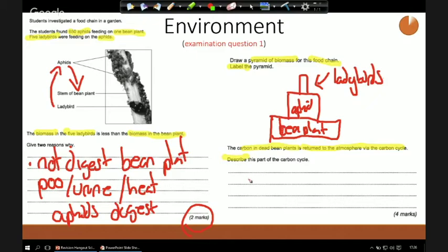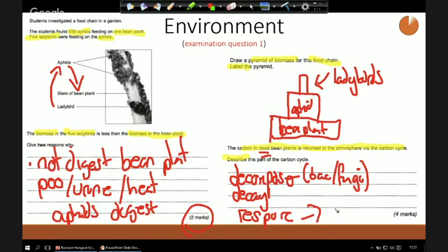For four points, we need to describe the part of the carbon cycle where dead bean plants are returned to the atmosphere. How's that carbon from something that's died getting back? Well, we're getting one mark for talking about a decomposer. It could be bacteria, it could be fungi. The decomposers are breaking the bean plants down. So they are causing decay. All of these microorganisms, bacteria, fungi, respire. And respiration releases carbon dioxide. Decomposers, bacterial fungi for one mark, are decaying. When they're breaking down the bean plant, they are respiring. And carbon dioxide is lost.